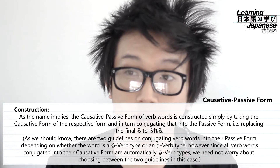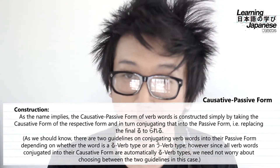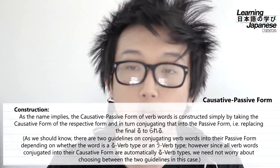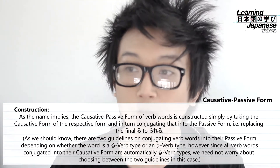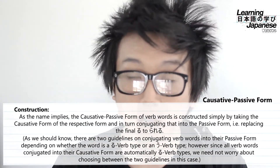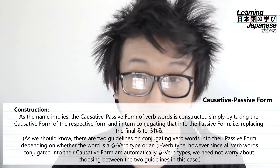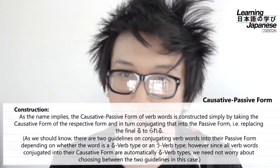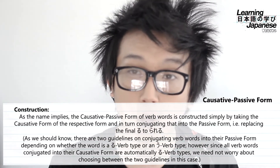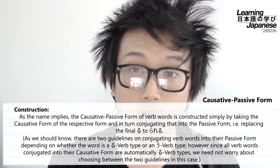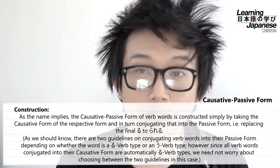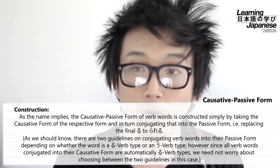Just like the name implies — causative is in front, passive is behind — we do the causative first, then the passive. When we turn things into the passive form there are different guidelines depending on whether it's a ru verb or an u verb. But in the causative passive, every single causative form verb is already going to be a ru verb. So we only need to follow the guideline for ru verbs into their passive form, which simply means replacing the ru with rareru.